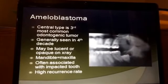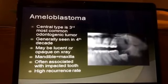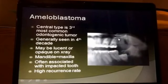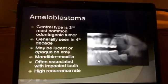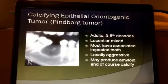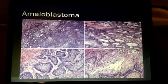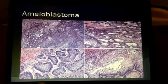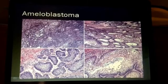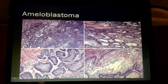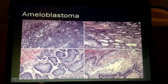Ameloblastomas are also reasonably common and may be associated with an unerupted tooth, particularly in the molar area. The mandible and maxilla are relatively evenly distributed in terms of location, and these can have a very high recurrence rate, typically seen in adults. Histologically, ameloblastoma is characterized by odontogenic epithelium in sheets, nests, and cords, with small spaces between the stroma and epithelium. It tends to have peripheral palisading with central pallor and occasionally small cyst formation.